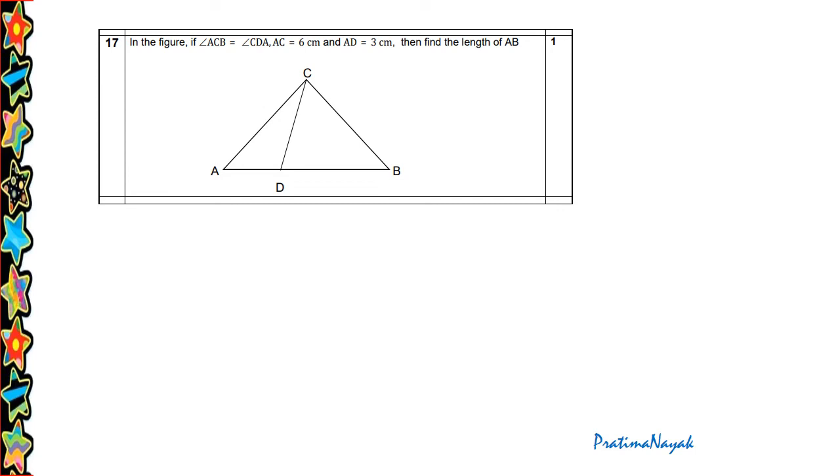This is a question from geometry. In triangle ACB, angle ACB equals CDA. AC equals 6 cm, AD equals 3 cm. Find the length of AB. So angle ACB equals CDA.